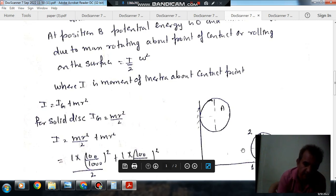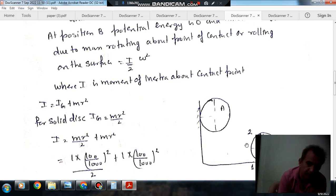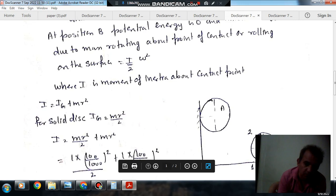And this disk has only kinetic energy because its potential energy has been converted into kinetic energy. So kinetic energy is given by half I omega squared. I is moment of inertia about the point of contact, because rolling is rotation about the point of contact. And moment of inertia about the point of contact is IG plus MR squared. IG is moment of inertia of the disk about its center, and this is given by MR squared by 2.